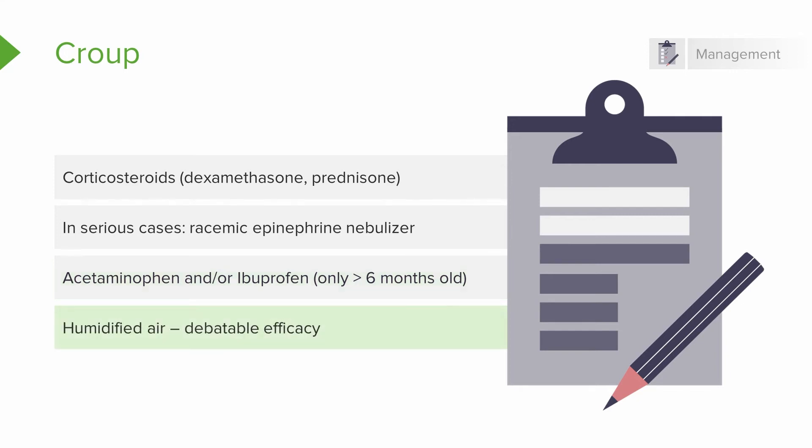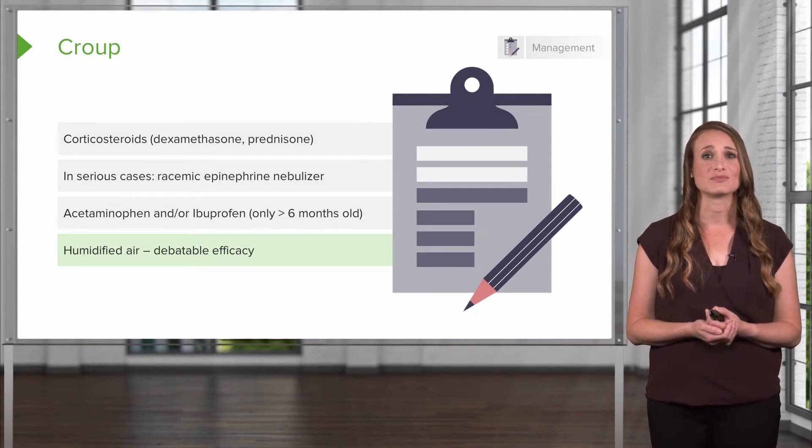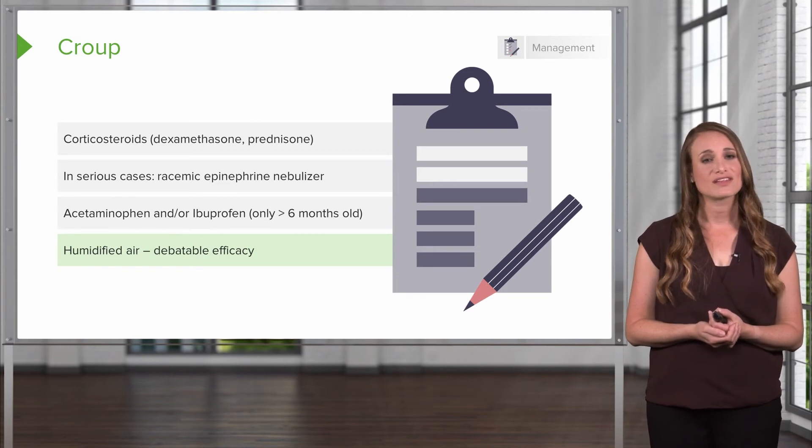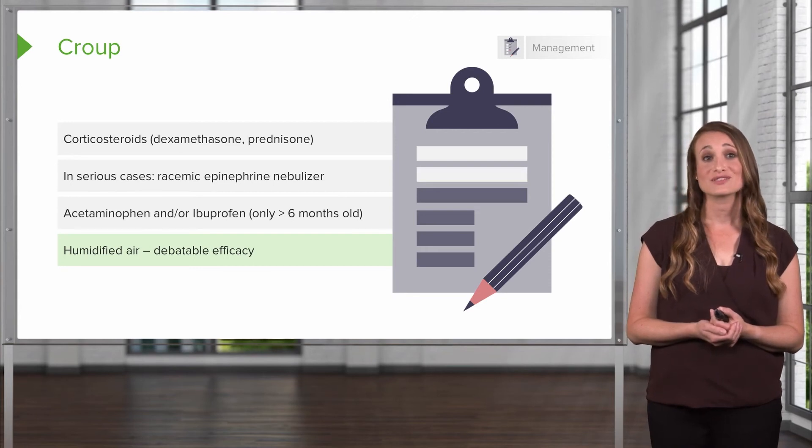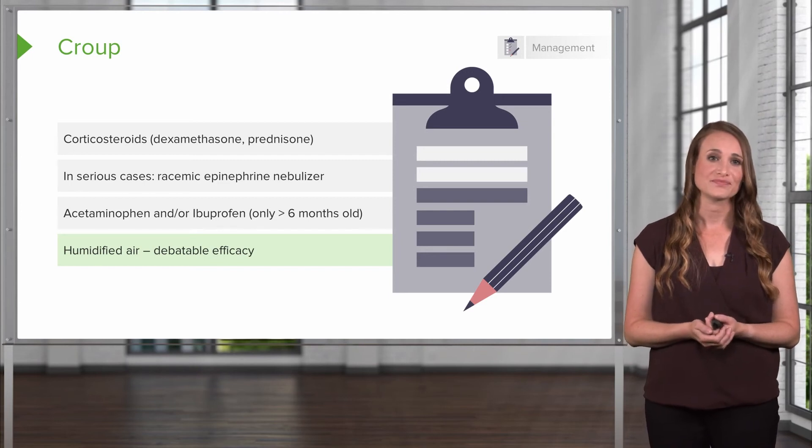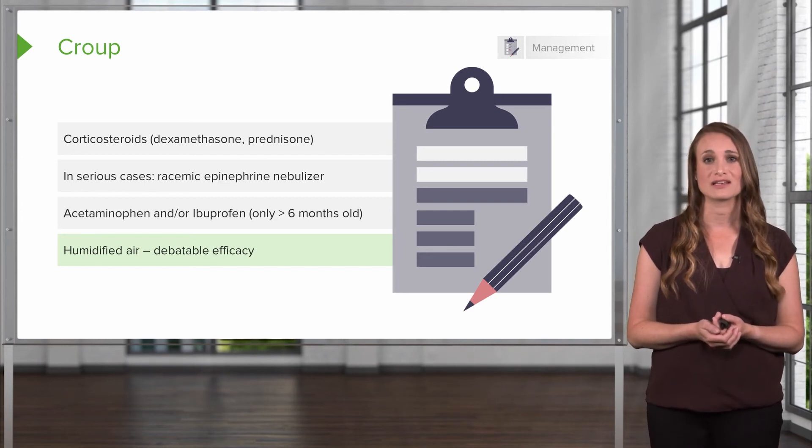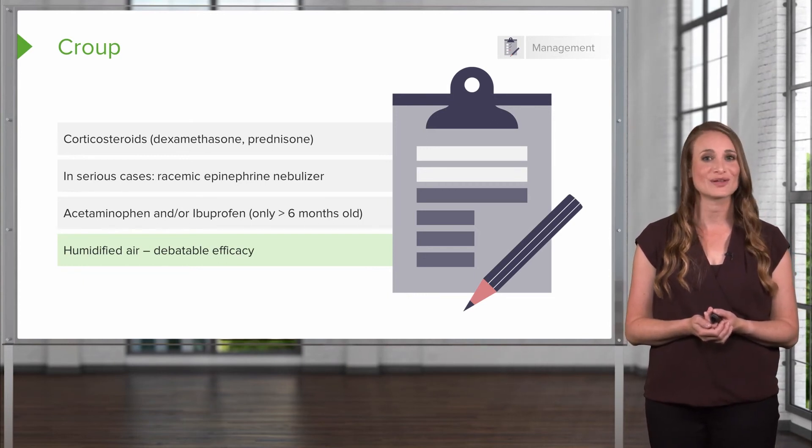A controversial management technique is humidified air. It has debatable efficacy. It used to be the mainstay, but delivery devices have been evolving and humidifying crib tents are no longer used. In studies, they found that the particle size created by blow-by humidifiers is not optimal for deposition in the larynx. And also, they've studied warm and dry or cool and dry air, and that actually produced the greatest reduction in airway resistance, whereas there was no reduction in the moist air group. Some countries have completely abandoned this treatment regimen, although in the United States the standard for inpatient and outpatient management of croup still includes humidified air.